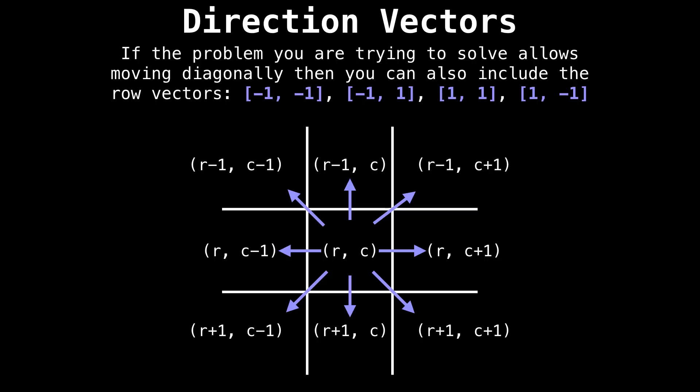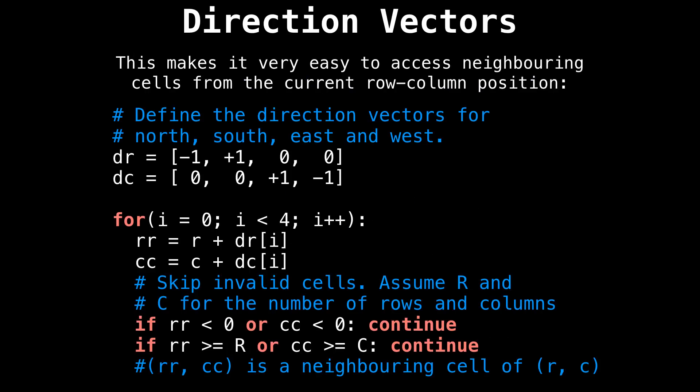If the problem you're trying to solve allows moving diagonally, then you can also use the row vectors [-1, -1], [-1, 1], [1, 1], and [1, -1]. Using row vectors makes it easy to access neighboring cells from the current row-column position.